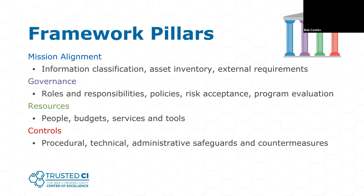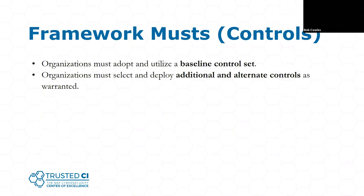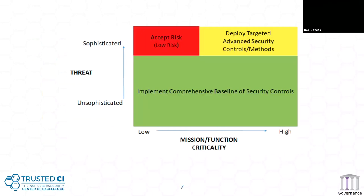We've talked in previous sessions about the framework pillars, so you should have some familiarity with those. The main thing we're going to talk about today is the controls — the procedural, technical, and administrative safeguards and countermeasures. The Trusted CI framework has two musts associated with controls: organizations must adopt and utilize a baseline control set, and they also need to select and deploy additional and alternate controls as warranted — corresponding to the green area for baseline controls and the yellow area for targeted controls.